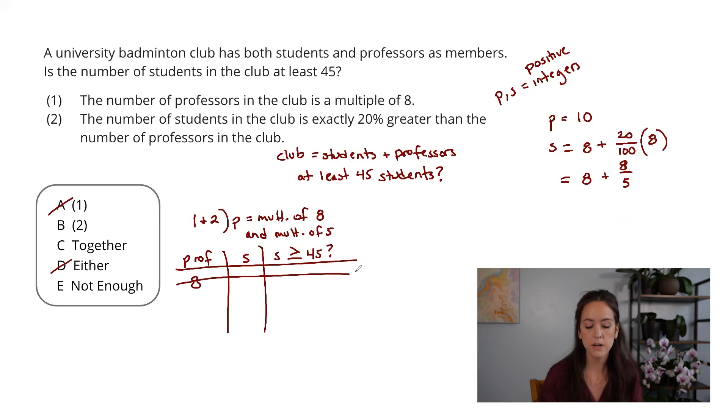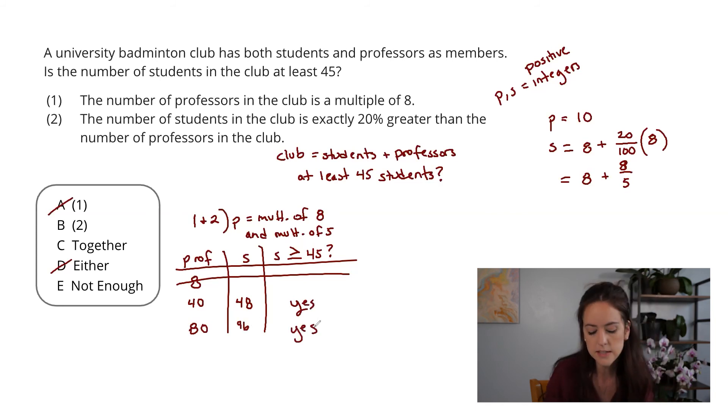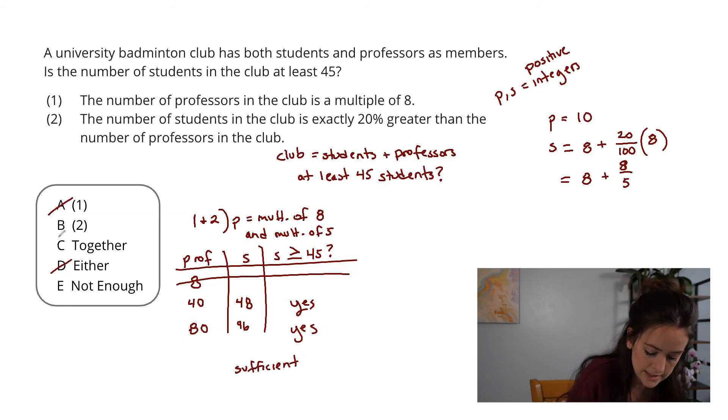So actually, the very first number that's legal as a case here, which is a multiple of both 8 and 5 is 40. If I have 40 professors, then I have 48 students. If I have 80 professors, then I have 96 students. In both of these cases, actually, the students are indeed going to be greater than or equal to 45. So now, once I've combined both of these pieces of information, I can see, in fact, that this is sufficient. I'm able to go ahead and select the correct answer here, which is C.